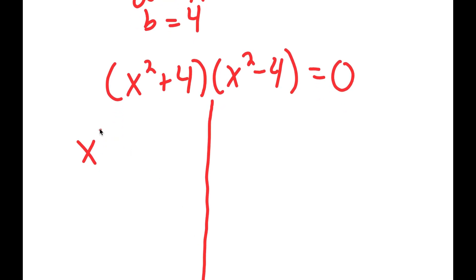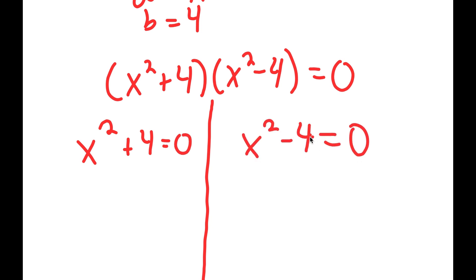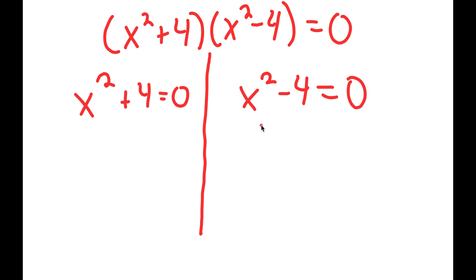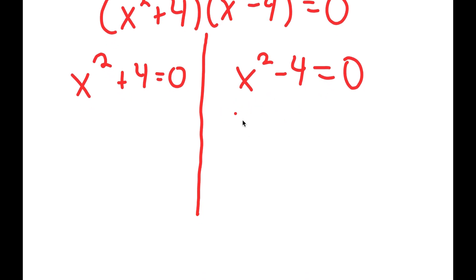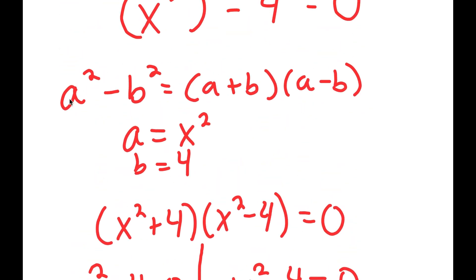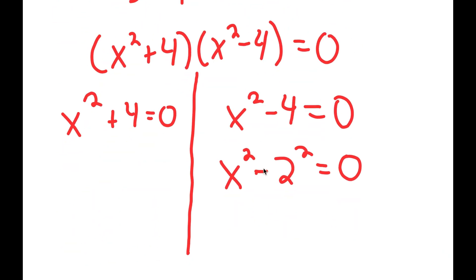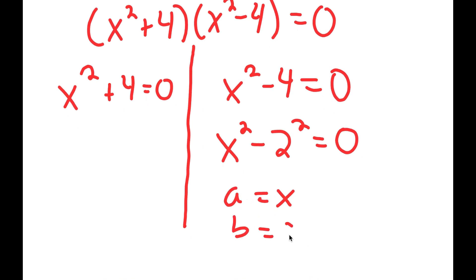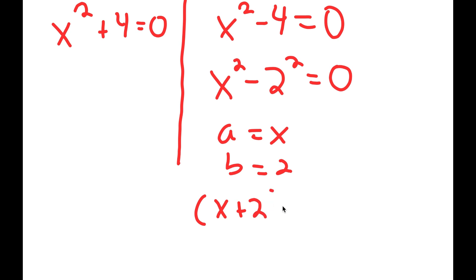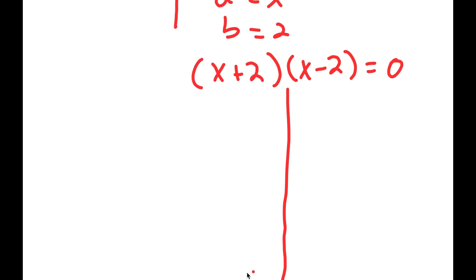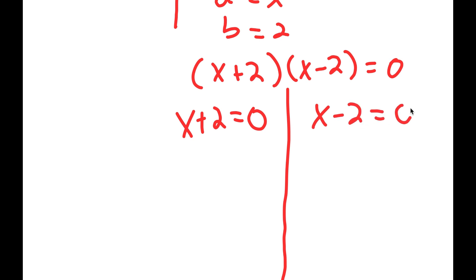So x squared minus 4 is the same thing as x squared minus 2 squared. Again, I can use the property a squared minus b squared is equal to a plus b times a minus b. In this case, a is x and b is 2, so I get x plus 2 times x minus 2 is equal to 0, giving me yet another two equations: x plus 2 is equal to 0, and x minus 2 is equal to 0.